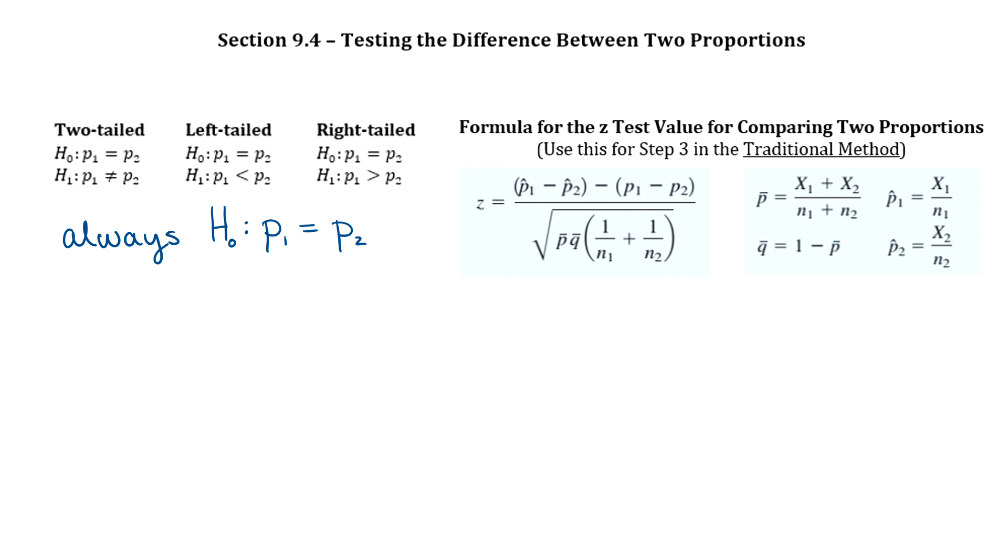As far as your hypotheses, your null hypothesis is always going to state that there is no difference between the proportions, so you'll always say that p1 is equal to p2. And then your alternative hypothesis will just depend on the phrasing in the question. With this section, it is straightforward, so your typical keywords will mean what they're used to meaning. So we will start with the traditional method.